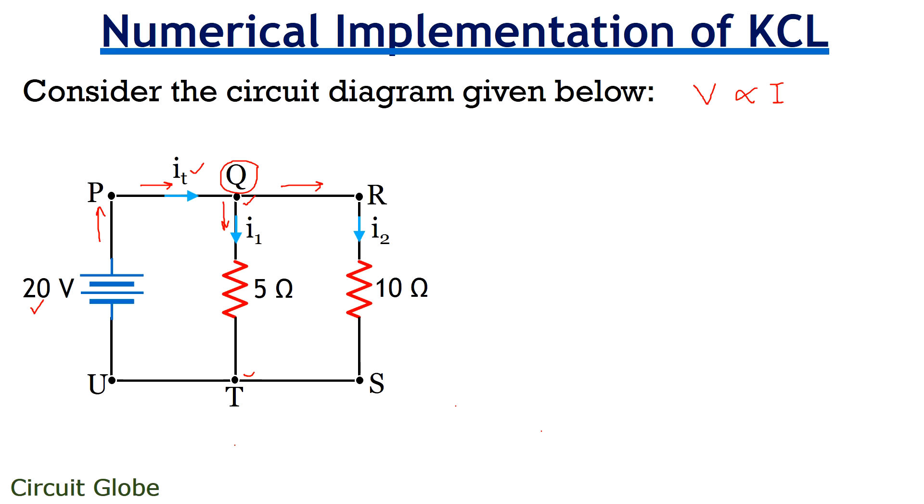Okay, so more simply we can write it as V is equals to IR. So, a modified version of Ohm's law that is I is equals to V by R is used in order to determine the current through branch QT and RS that is I1 and I2.